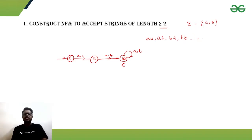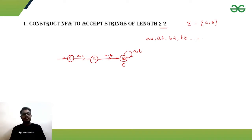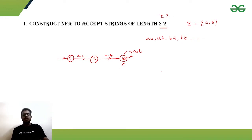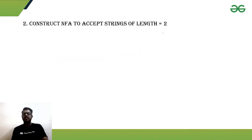Our condition is already satisfied after length 2, so we don't care about further input. If you remember, in the DFA there was no dead state for the case of length greater than or equal to 2. Similarly, there won't be any dead configuration for this NFA either. That is not the same case when the length must be exactly 2.